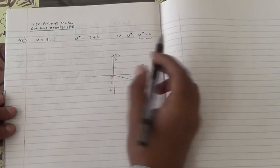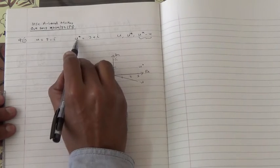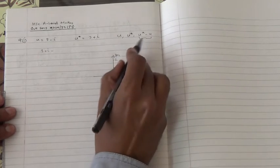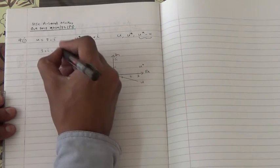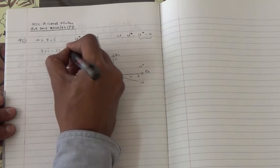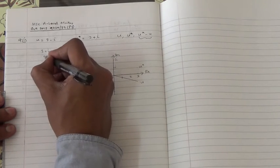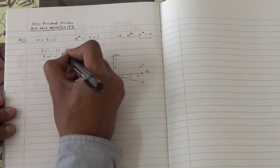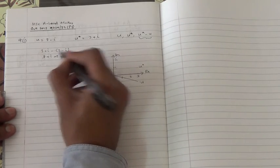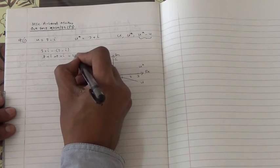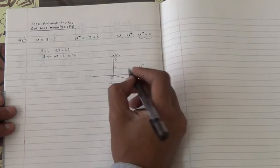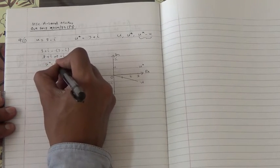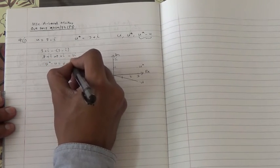First, we need to do u star minus u. What is u star? Three plus i. So we have three plus i minus u. u is three minus i. So three minus i. And in doing that, we're going to get three plus i minus three. Minus minus becomes plus i. So three minus three cancels out, and we end up with two i.